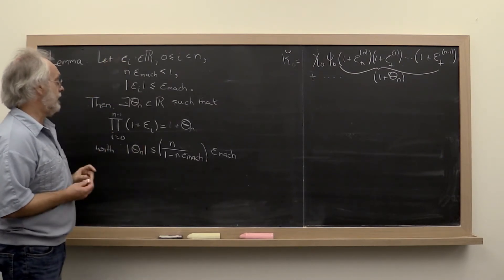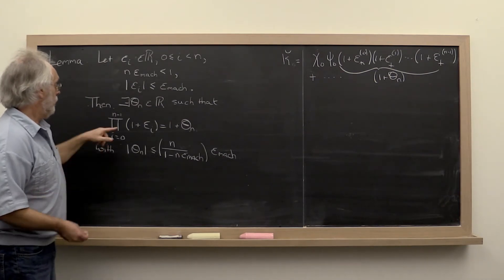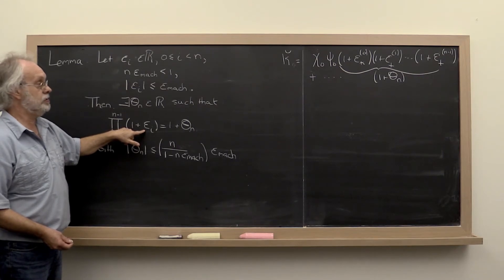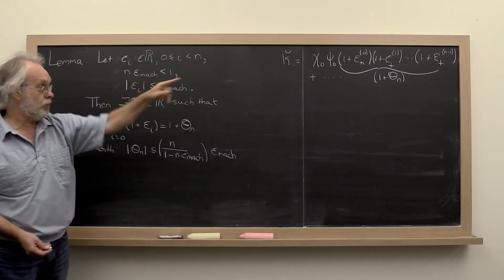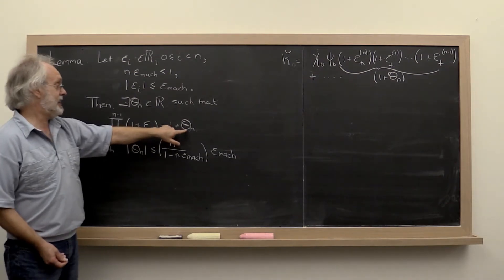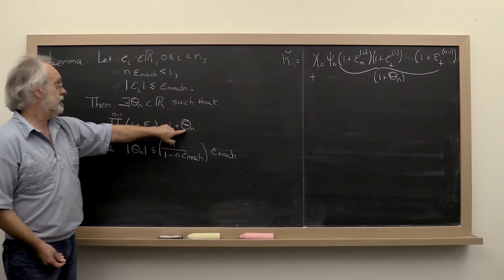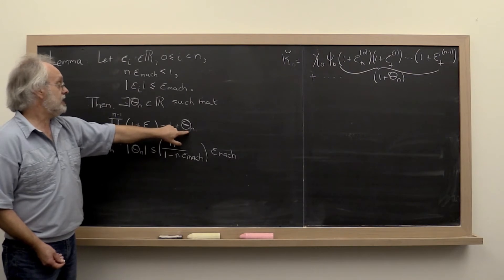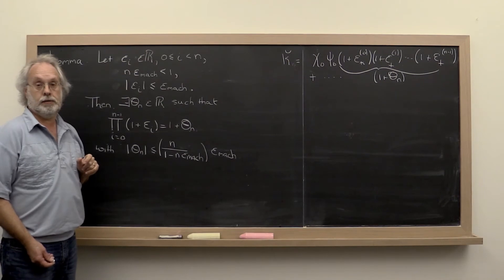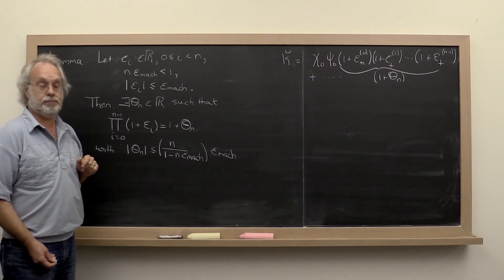So if we have that, then we can take the product of n such 1 plus epsilon terms. This is just a more concise way of writing that. And find a theta sub n such that 1 plus theta sub n is equal to the product of all of those factors.